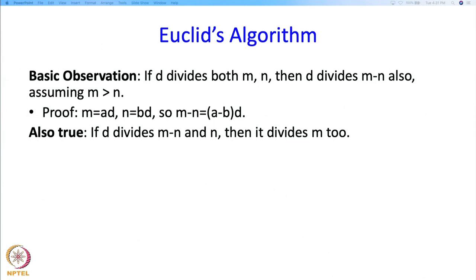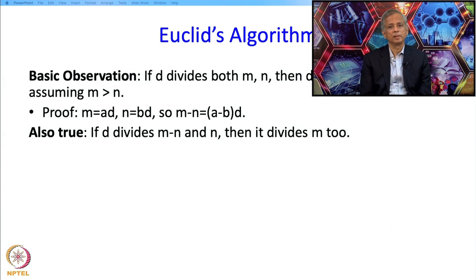Also true is sort of a converse. It says that if D divides m-n and n then D divides m as well. So why is that true? Again the argument is very similar.